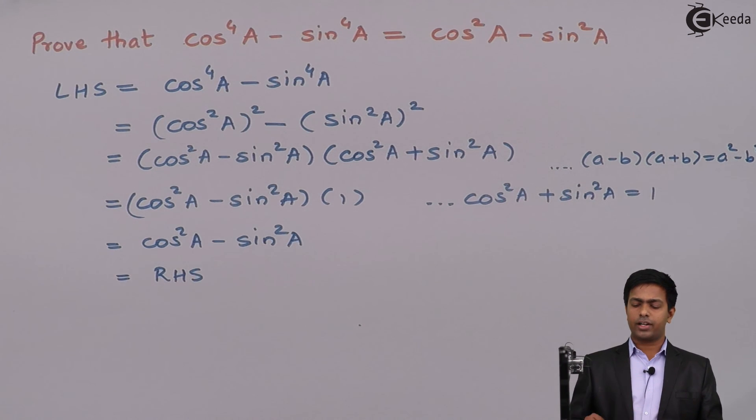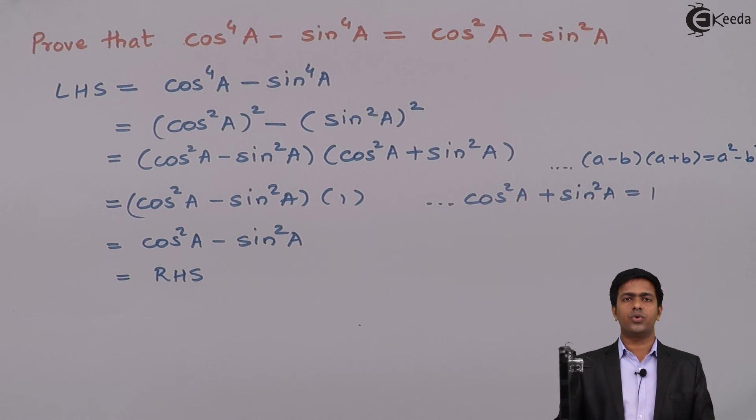So here, we have proved that cos raised to 4A minus sin raised to 4A is equal to cos square A minus sin square A.